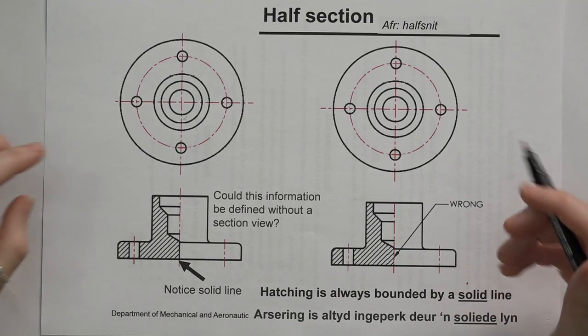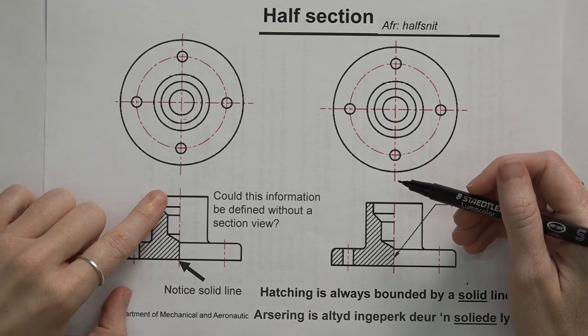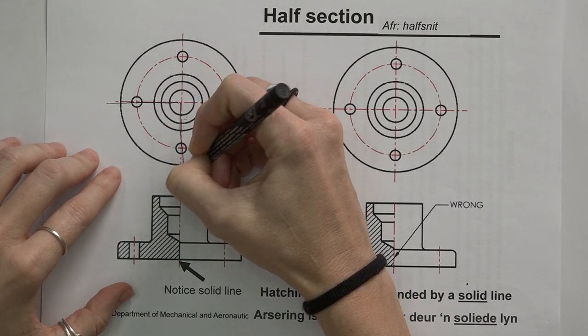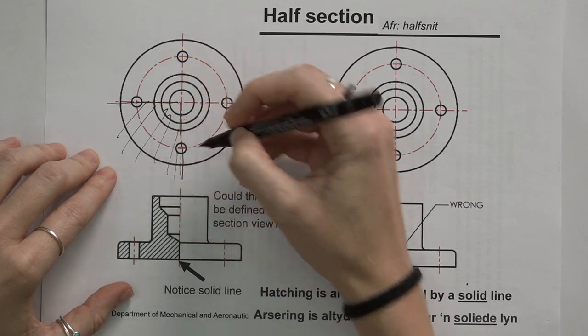So here for example, if we have a case where when we cut only a quarter away, so again here we're only cutting away this half, and so this piece is taken away.